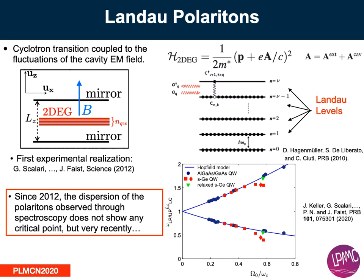Landau polaritons appear when you have coupling between cyclotron transitions between Landau levels and fluctuations of the cavity electromagnetic field. This was theoretically predicted in 2010 and observed experimentally since 2012. However, they have never observed any quantum critical point in such a system.